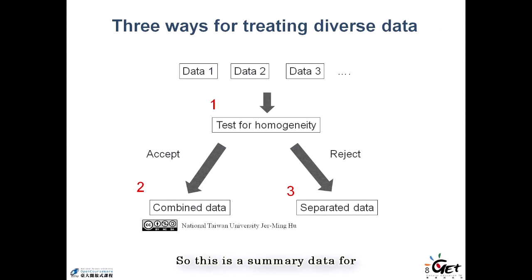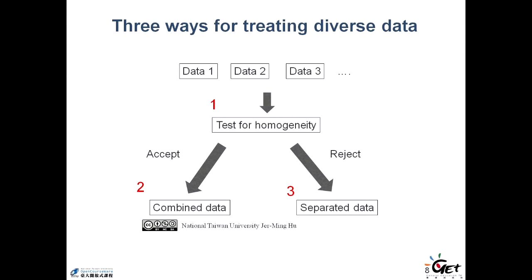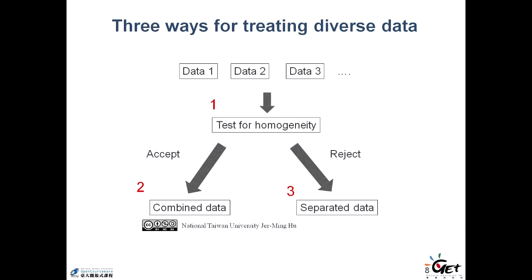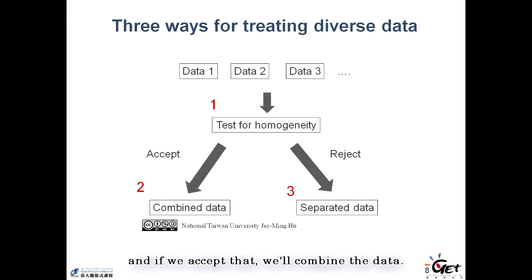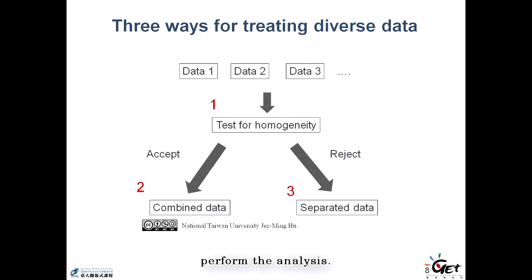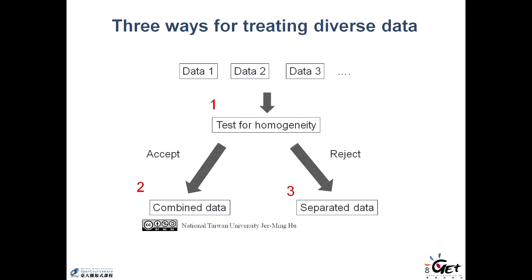To summarize: we get different datasets from different partitions or different genes, and we test for homogeneity. If we accept homogeneity, we combine the data. If we don't accept it, we perform the analysis separately — although even if it's rejected, I still combine. But it's a different way of thinking. We'll see you next time.